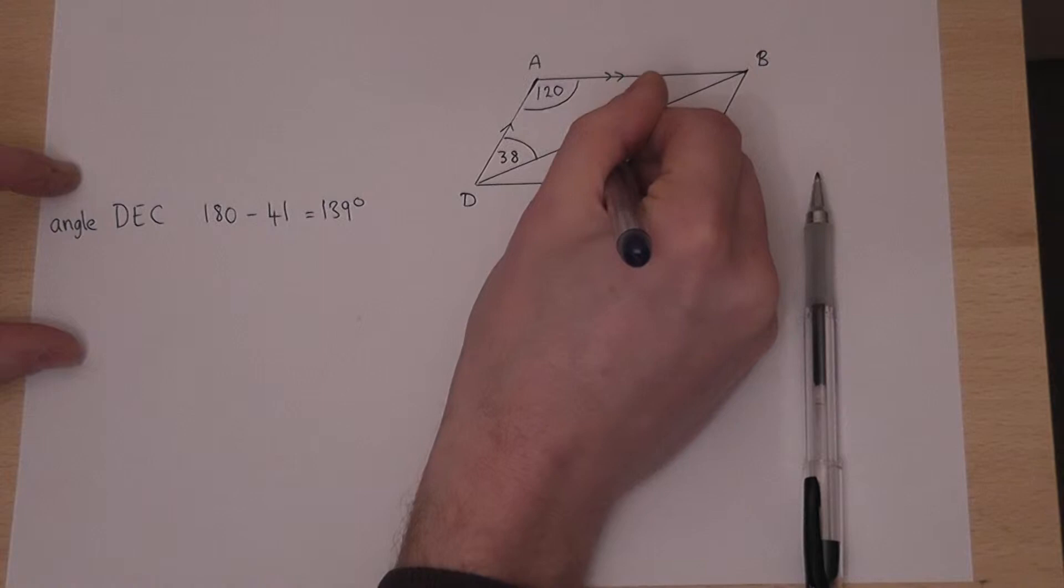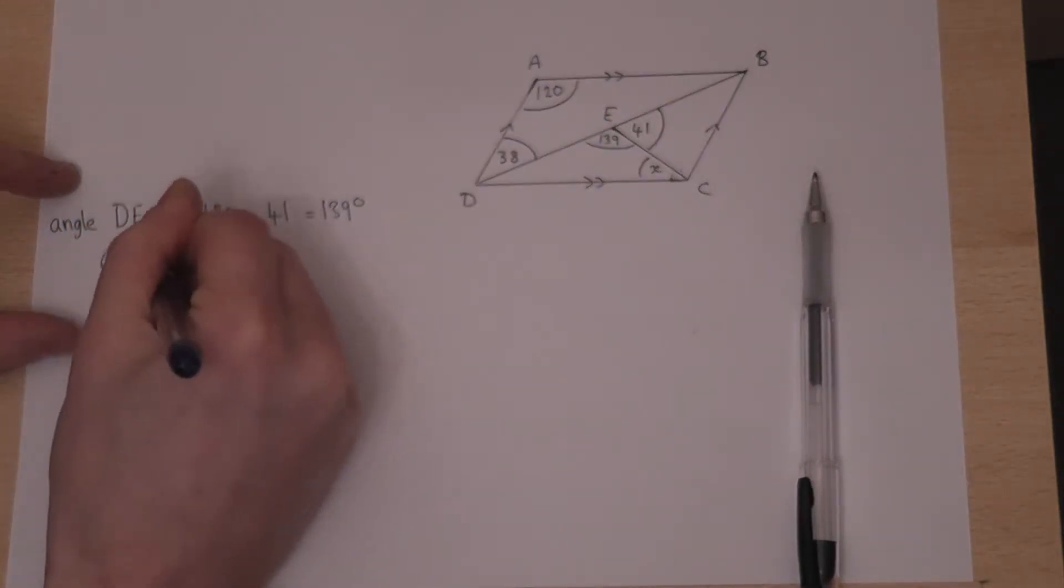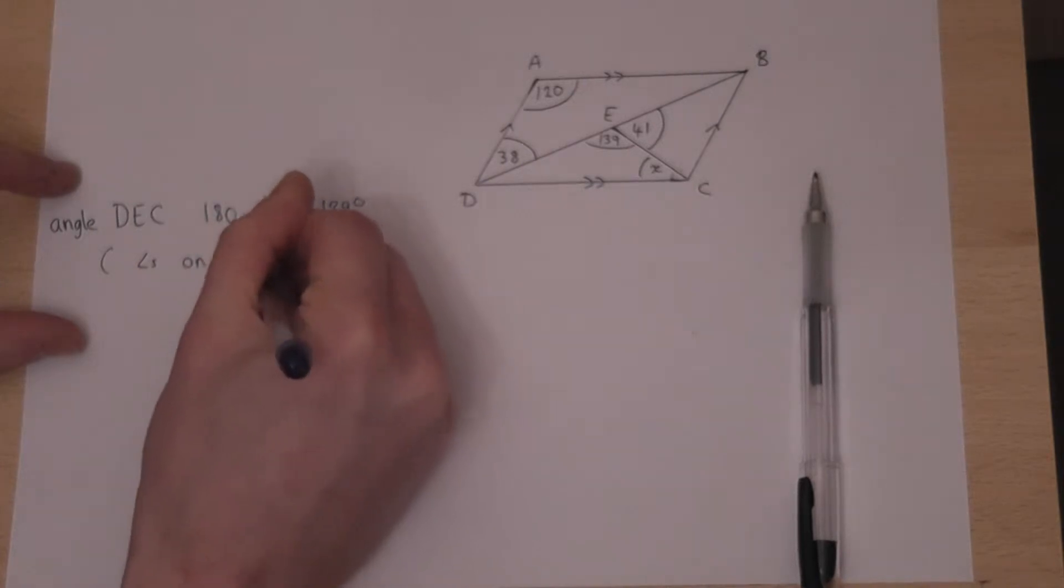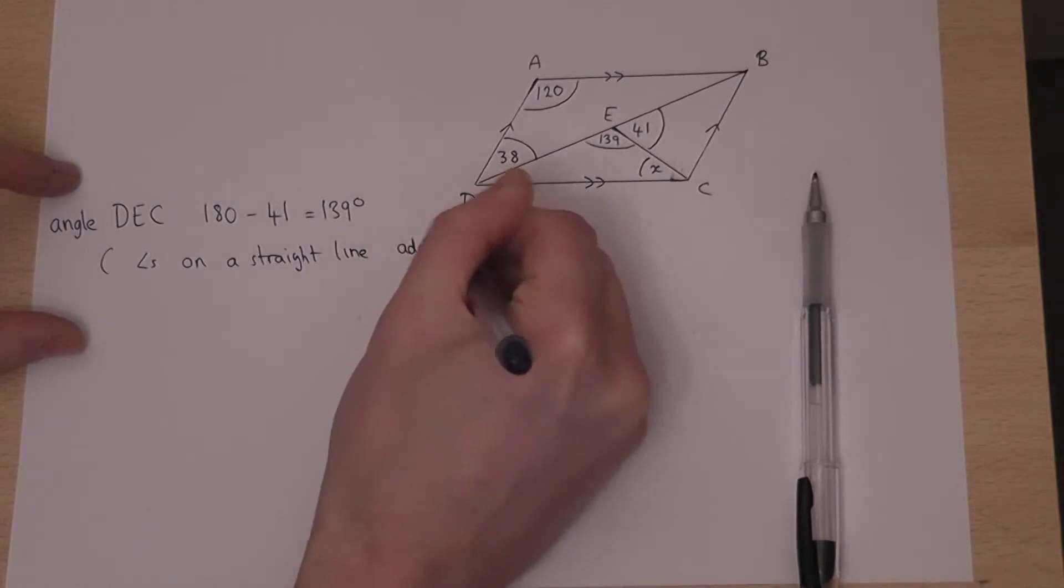So that is 139. The reason being that angles on a straight line add to 180.